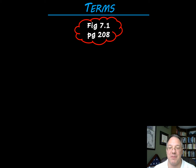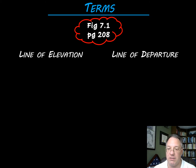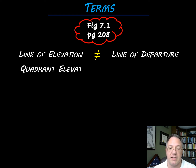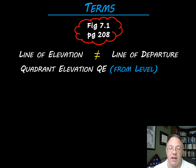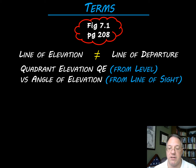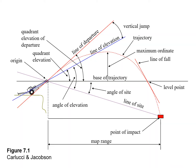To summarize the key points: line of elevation and line of departure are not equal — we may make a simplifying assumption that they are, but they are not the same terms. Quadrant elevation is measured from a level baseline, whereas angle of elevation is measured from the line of sight to the actual target. Keep those two straight. That full picture from figure 7.1 puts all these terms together so you can mentally take them apart and understand all our angles and directions.